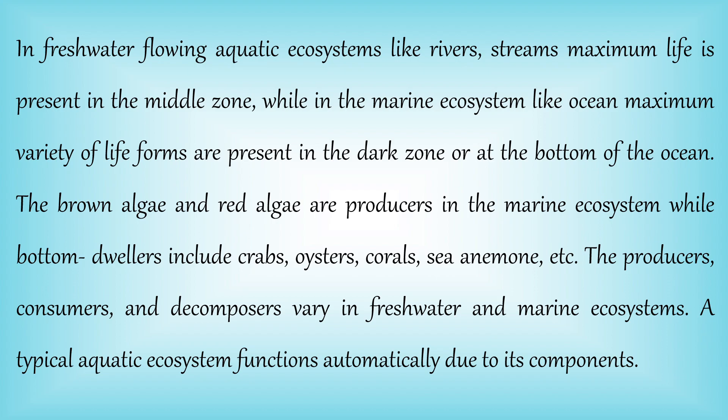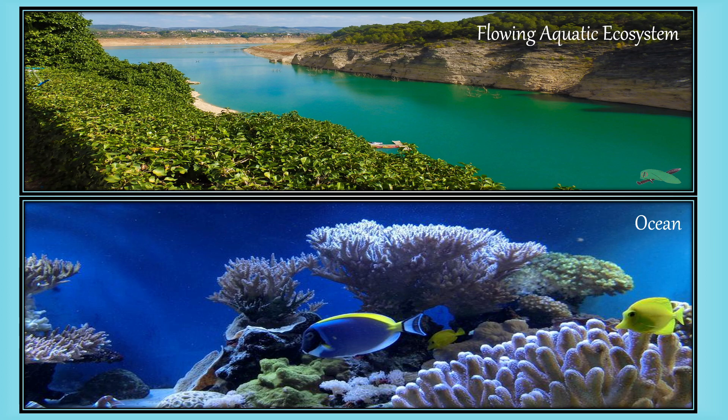Producers, consumers, and decomposers differ between freshwater and marine ecosystems, but all aquatic ecosystems function automatically because of their abiotic and biotic components. Producers produce the food, consumers consume the producers as food, and decomposers break down the dead bodies of both plants and animals, allowing their decay. In flowing freshwater ecosystems like rivers, life is sparse at the surface but maximum fish are found in the middle zone.